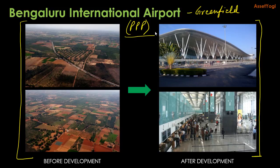Hyderabad International Airport, Delhi International Airport, and Mumbai International Airport were also developed as public-private partnership projects. Hyderabad Airport was developed as a greenfield project, whereas Delhi and Mumbai International Airports were developed as brownfield projects — meaning Delhi and Mumbai airports were upgraded and expanded at the same site, whereas Hyderabad and Bengaluru airports were developed at a separate site altogether.